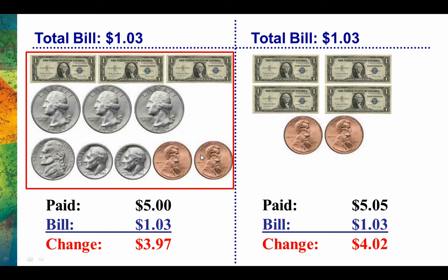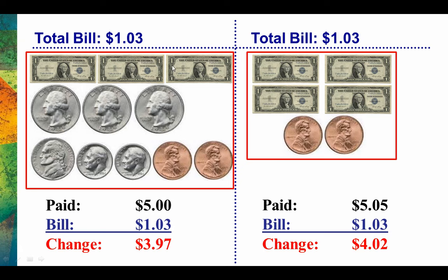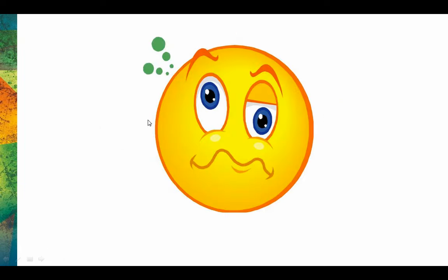So would you rather carry around all this change, or would you rather carry around just this? Keep in mind, they're equivalent amounts. Here we have $3, $3.25, $3.50, $3.75, $3.80, $3.90, $4, $4.02 — and right here we also have $4.02. It's just easier to carry this around than all of that. So the next time you need to make change, I hope you're less confused — and actually, I hope you're pretty confident, now that you understand how you can do it. Thanks.